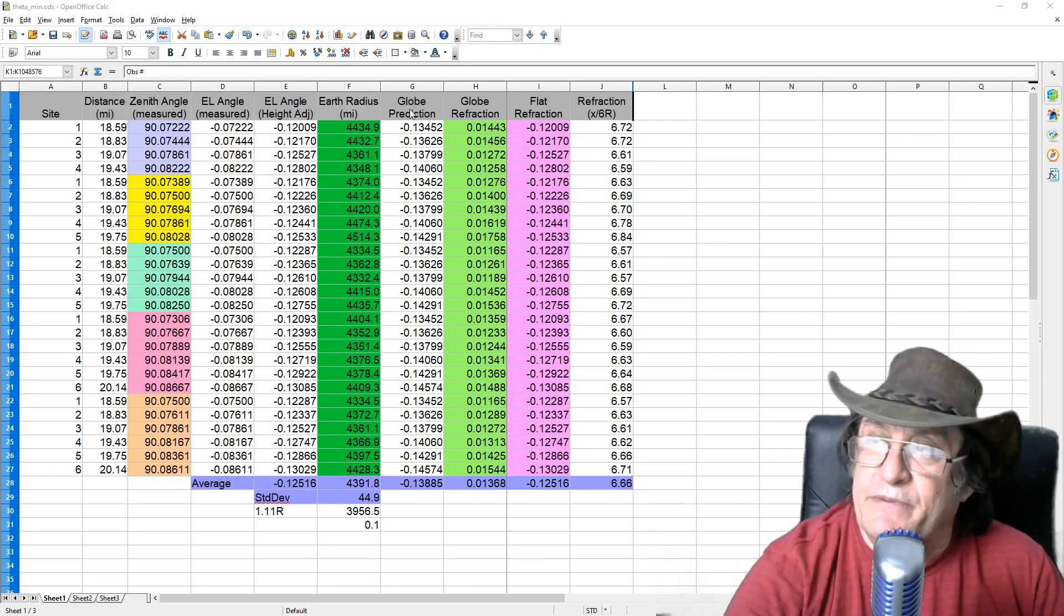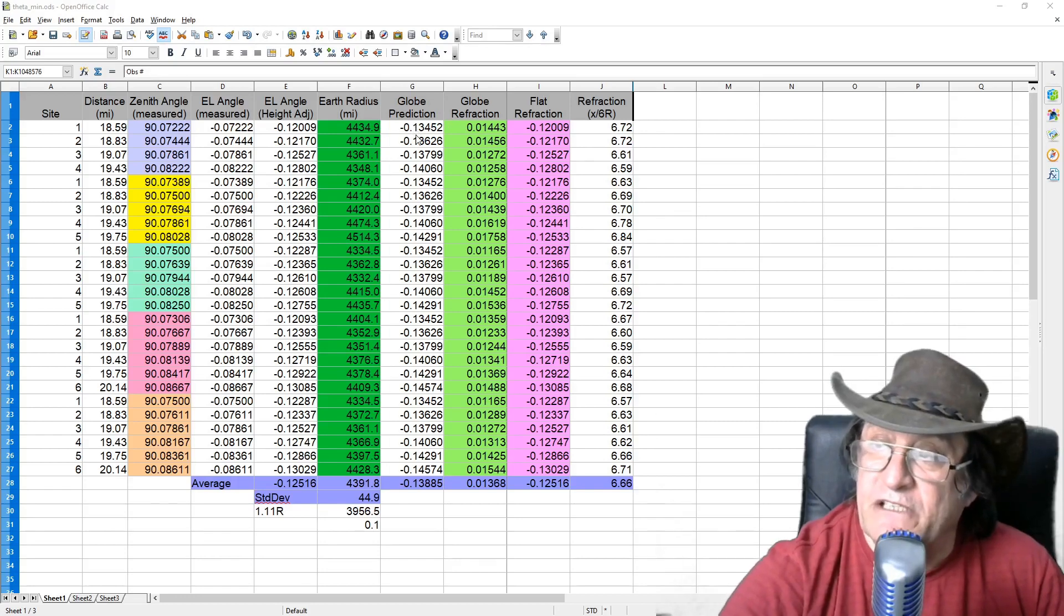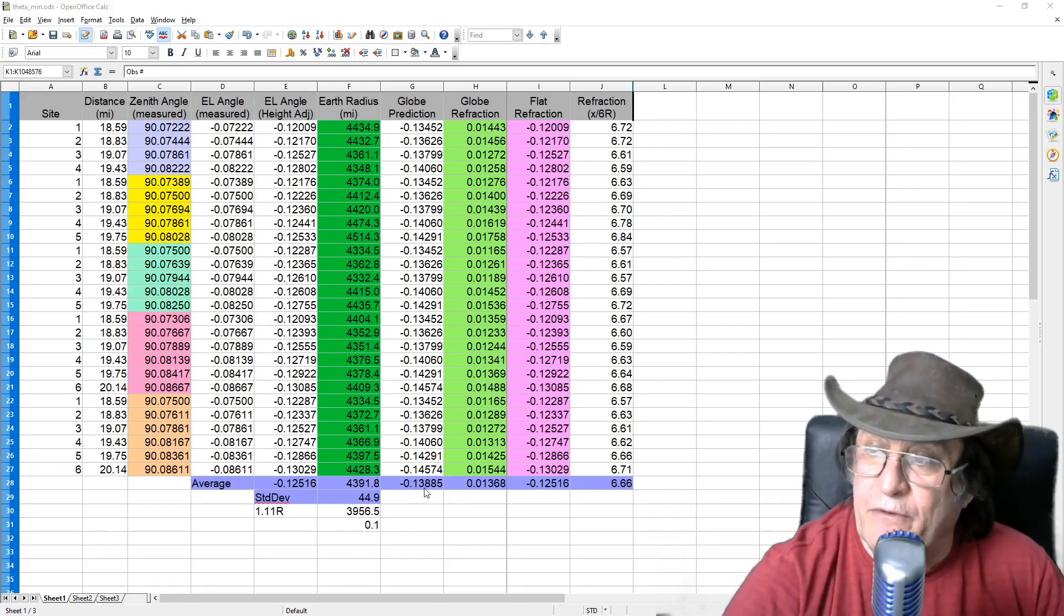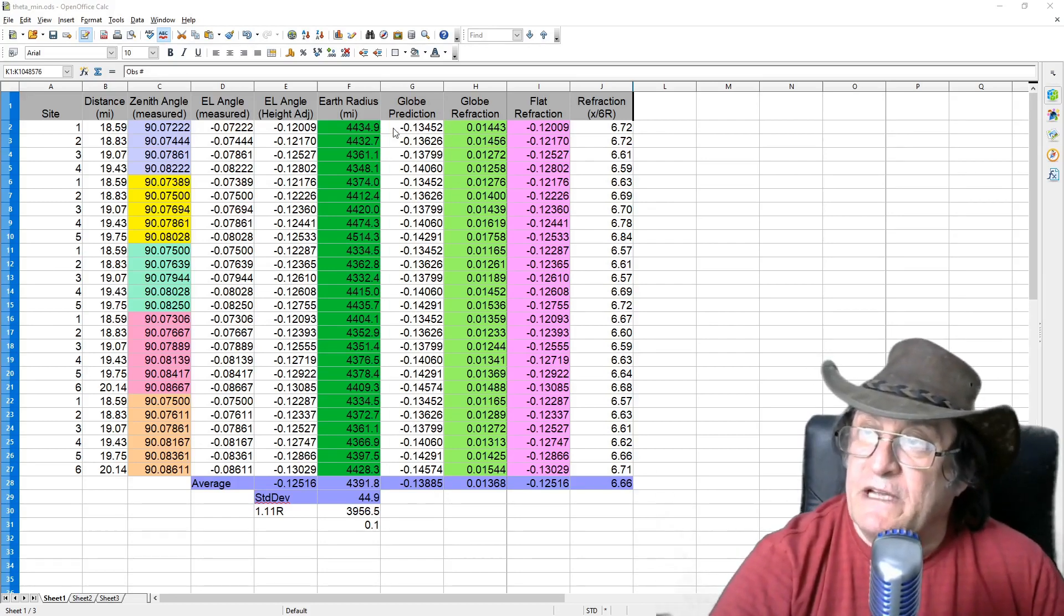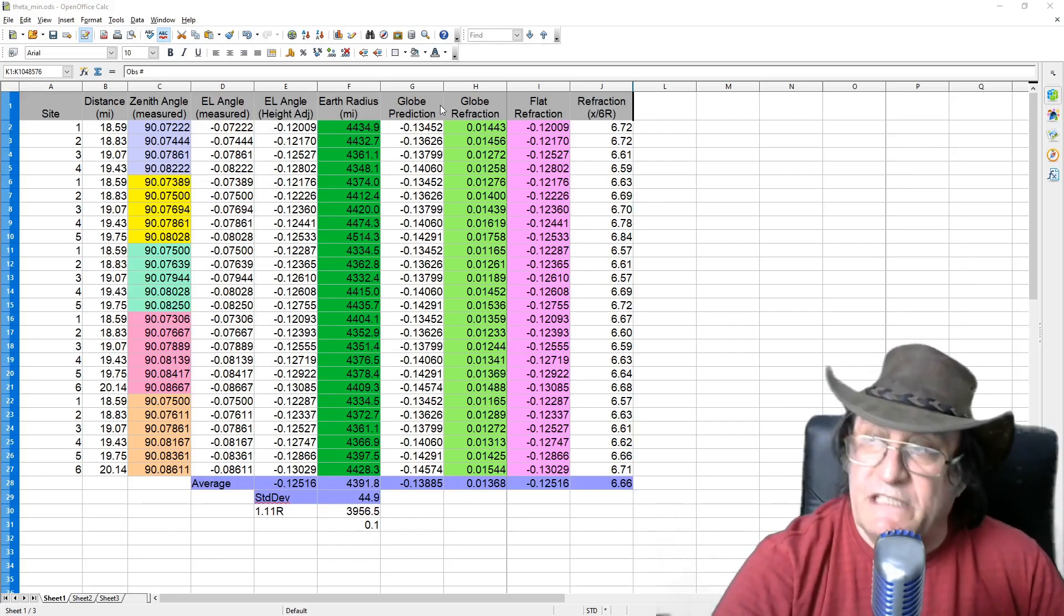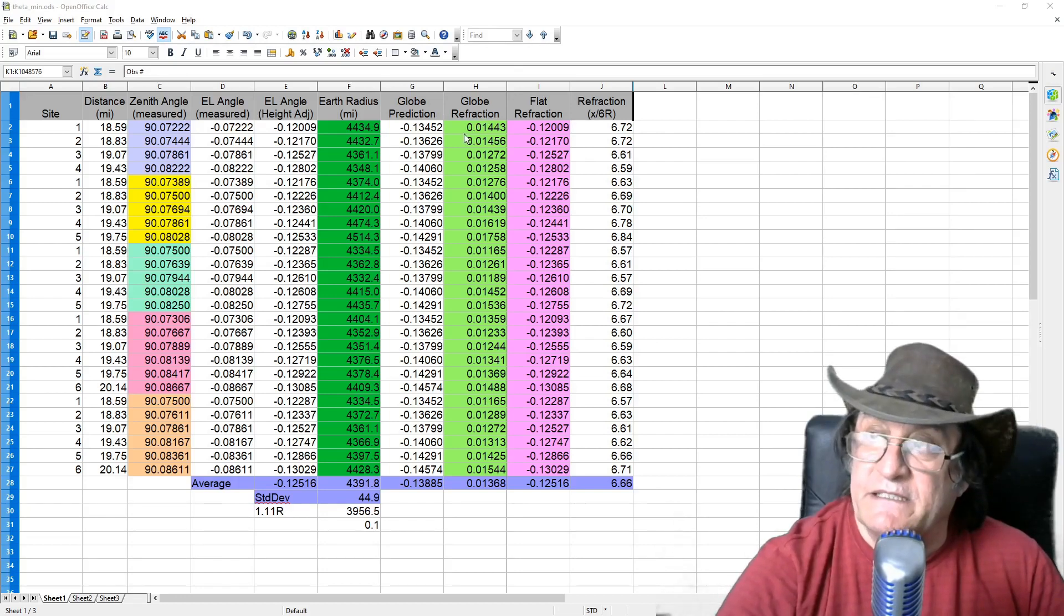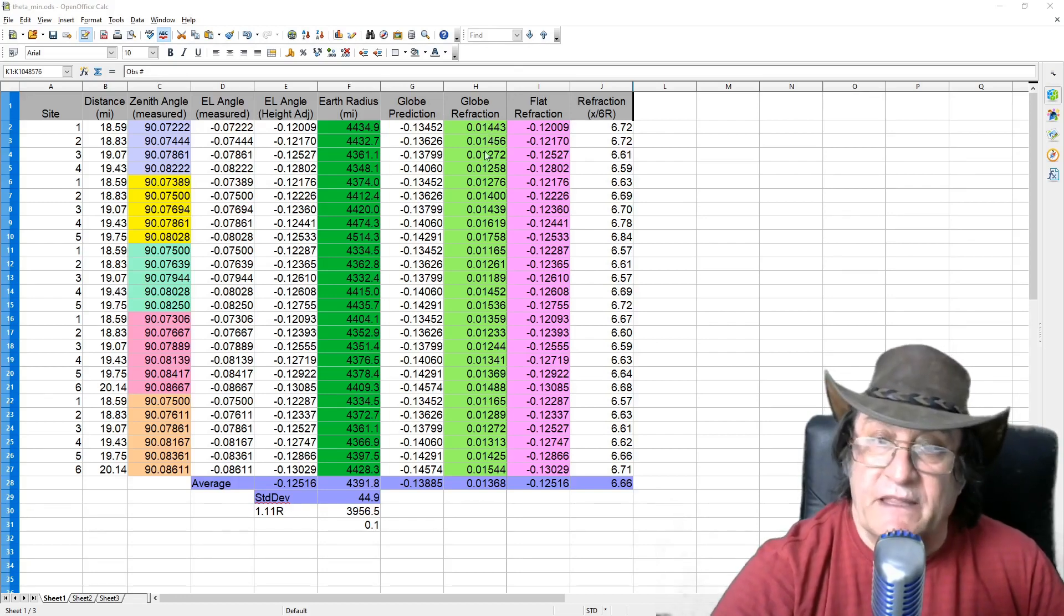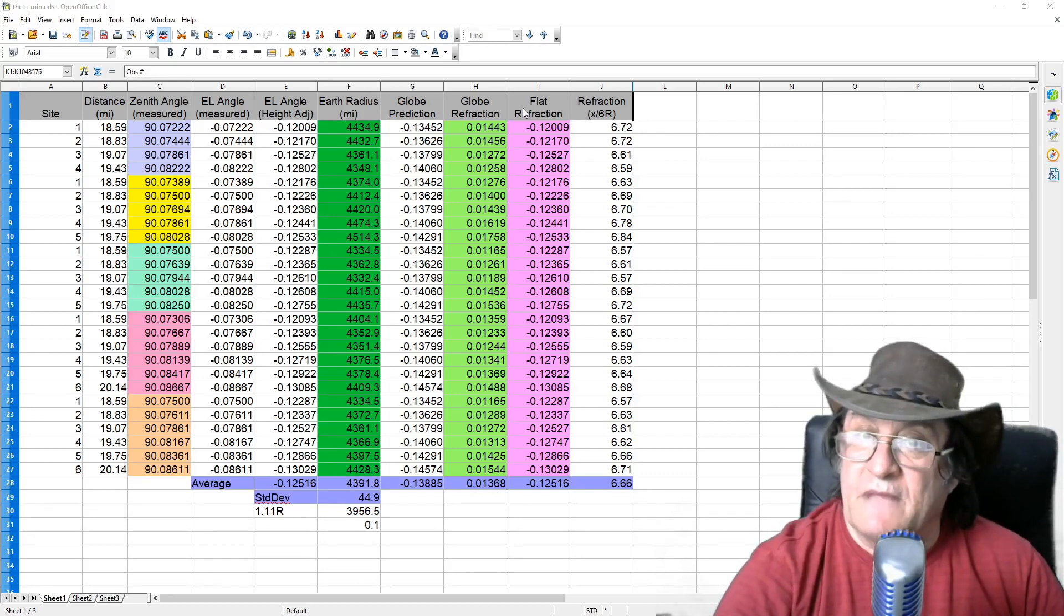One is what the globe prediction would be. This is the geometric angle, the dip angle, that you would be measuring with the theodolite if there was no refraction. So that average is 0.13885. And then I've worked out, based on the actual measurement, what would be the globe refraction in those circumstances? And the angle is 0.01 something there with an average of 0.01368.